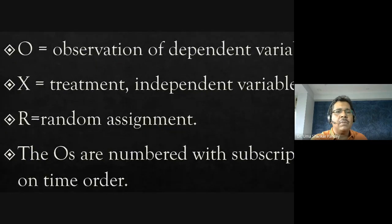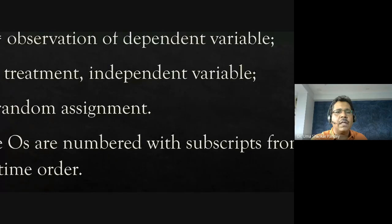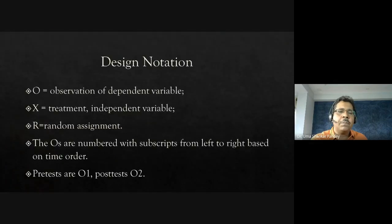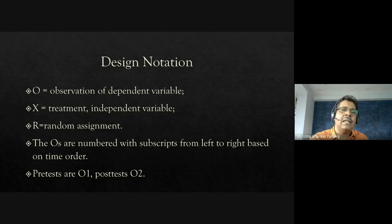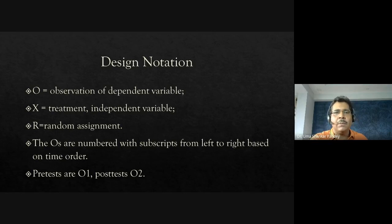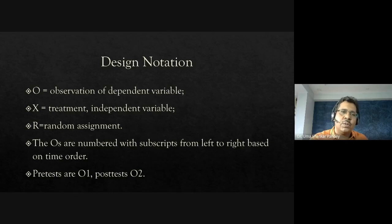Observations are numbered with subscripts from left to right in time order — O1 is the pre-test, O2 is the post-test, O3 would be a subsequent observation. So O is the observation, X is the treatment, and R is random assignment. Just like music notations, these are the notations of experimental design — you will be using these whenever you talk about experiments.